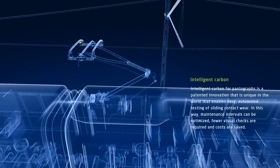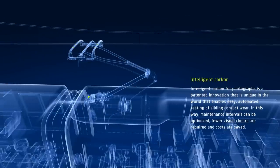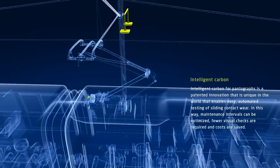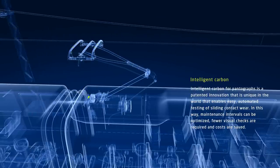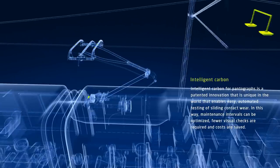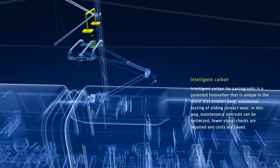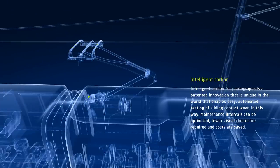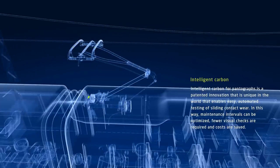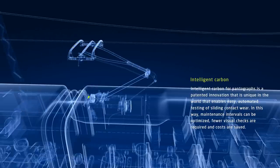Schunk developed an innovative solution for monitoring the sliding contacts of rail vehicles from a central location: intelligent carbon for pantographs. The measurement of sliding strip wear is automated so it's easy to determine when they should be replaced. This is Schunk's contribution to optimum maintenance intervals, meaning fewer visual checks and lower costs.